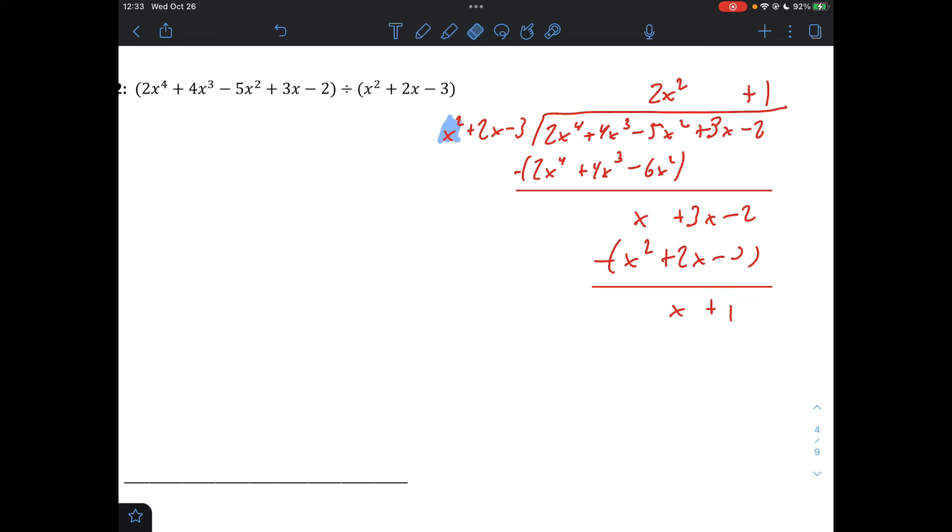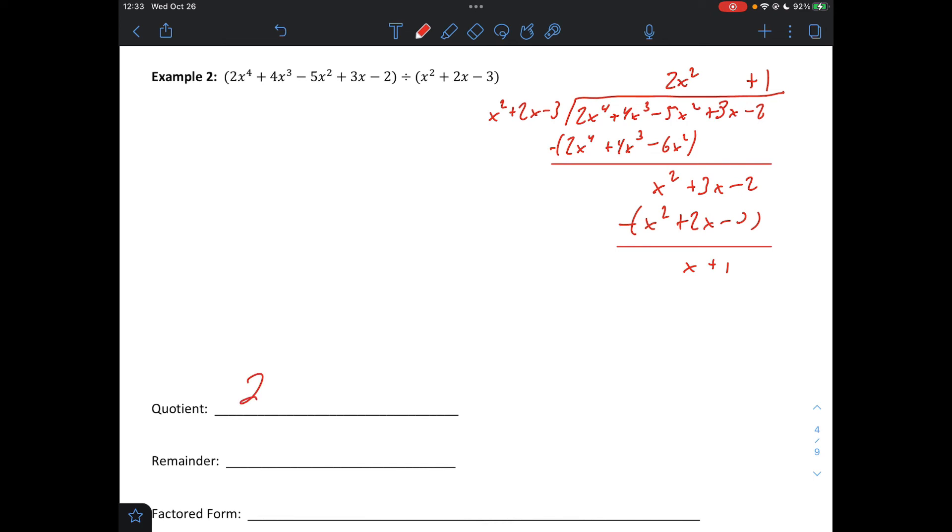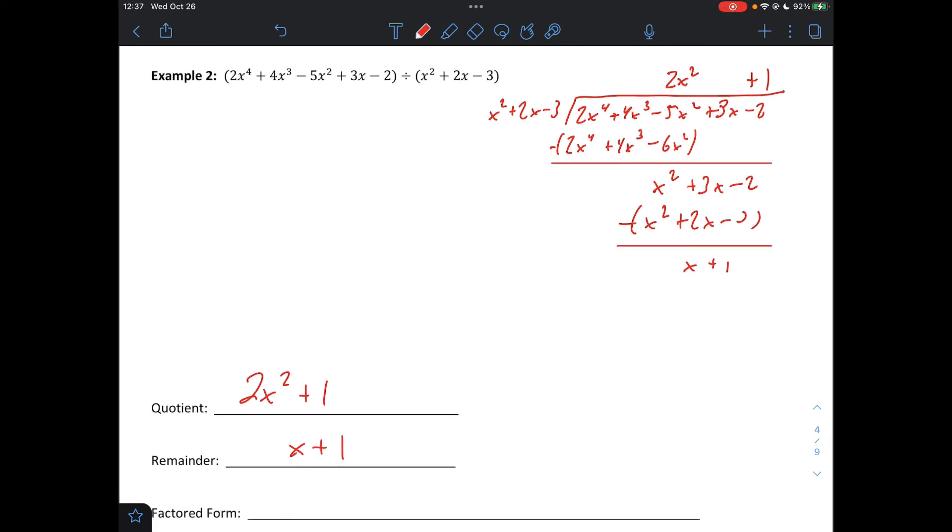So again, we want to try to divide first term into first term here. But you can't divide x squared into x evenly, which means we're done. And that tells us that this is our remainder. So our quotient is 2x squared plus 1. And our remainder is x plus 1. So if we're going to write our answer out here, our final answer, what we would get, it would be our quotient plus our remainder over our original denominator.